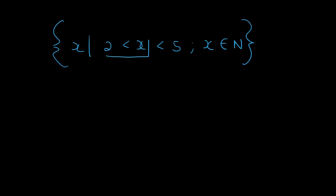If we look here it says that x is bigger than 2 and then x is also smaller than 5. So that's obviously the numbers going from 2 to 5.